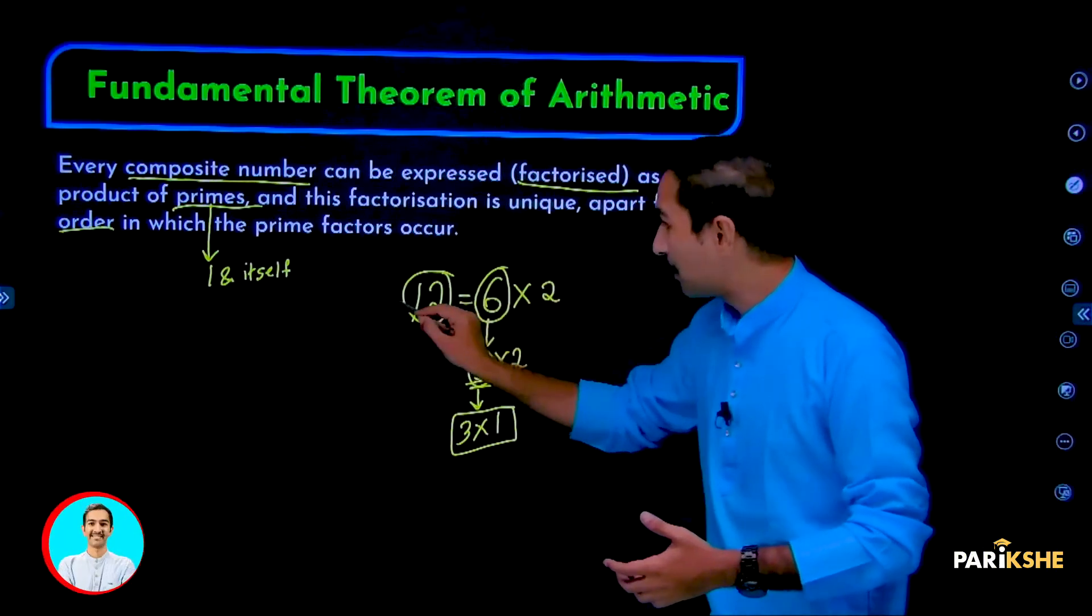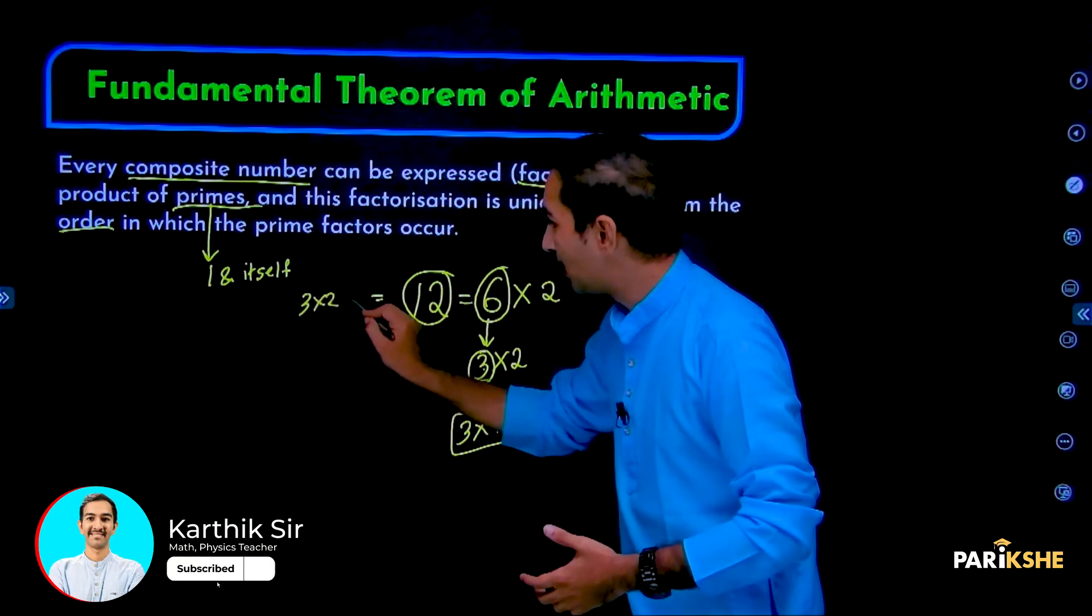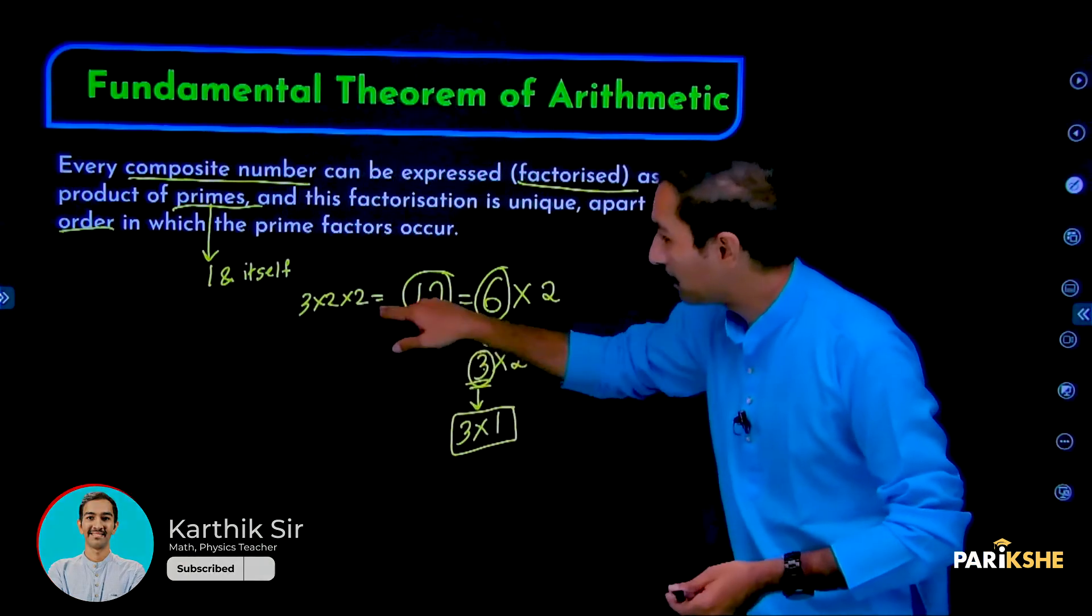Let me write 12 in its final form: 12 = 3 into 2 into 2.